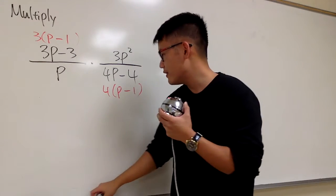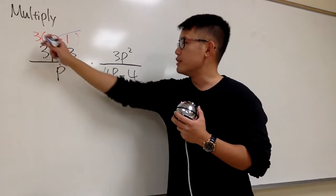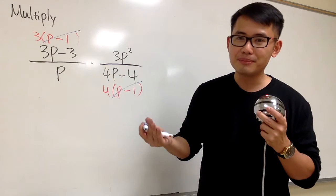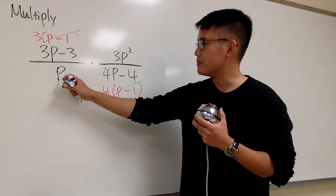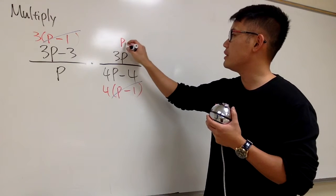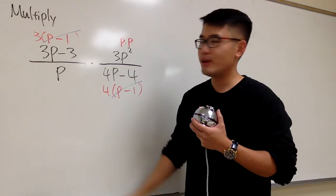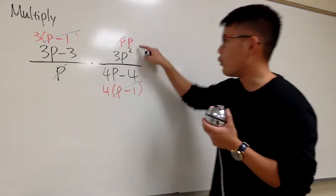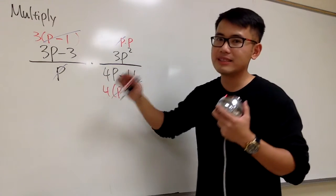And you see that the p minus 1 and p minus 1 cancel each other out. But then 3 and 4, I cannot reduce anything, right? And for this 3 and the other 3, they are both on the top — we cannot cancel them out. This p and this p squared: p squared means p times p, right? So this p right here is a factor, and we have this p down here — we can cancel them out. And we still have 1p left.